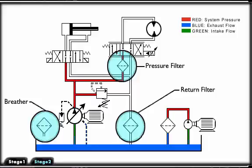Return filters best provide for maintaining total system cleanliness depending on their micron rating. They can trap very small particles before they return to the reservoir. They must be sized to handle the full return flow from the system.